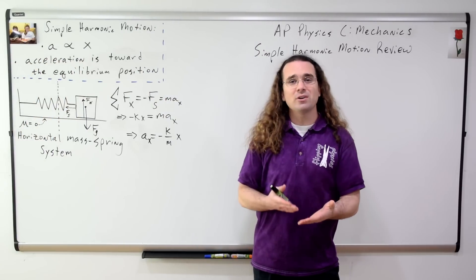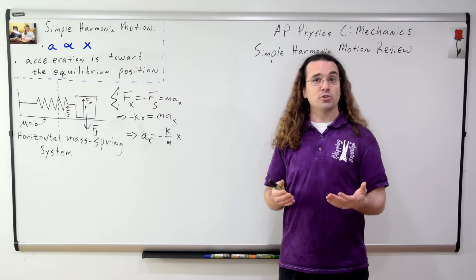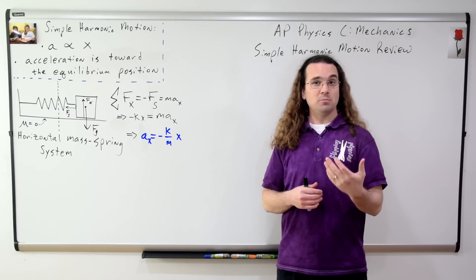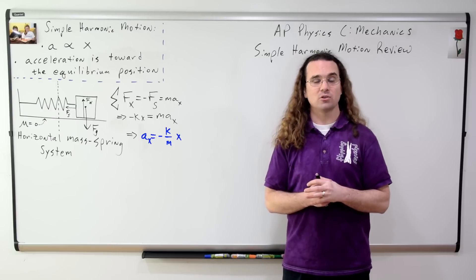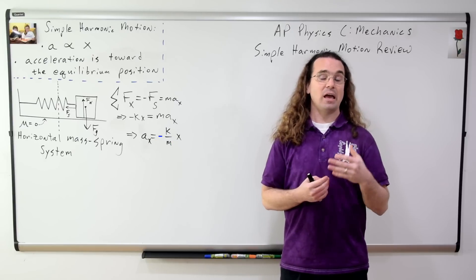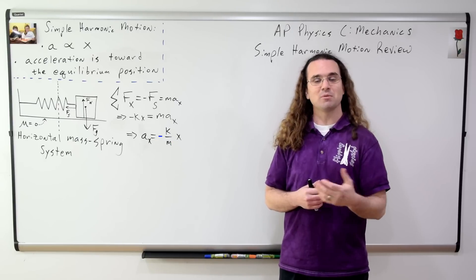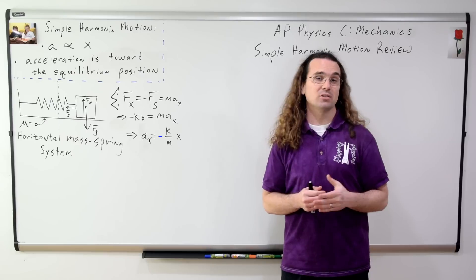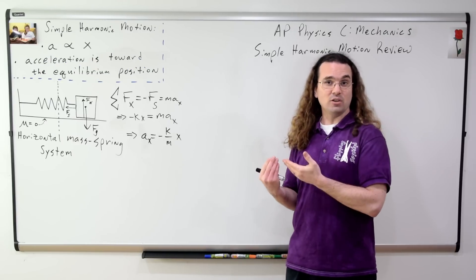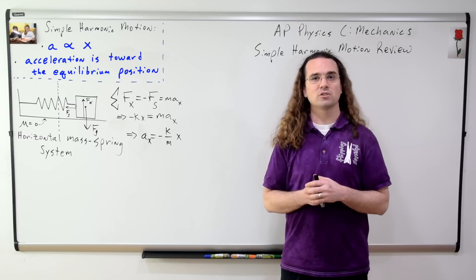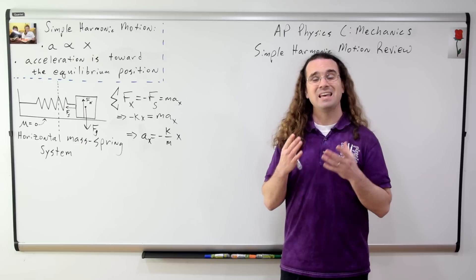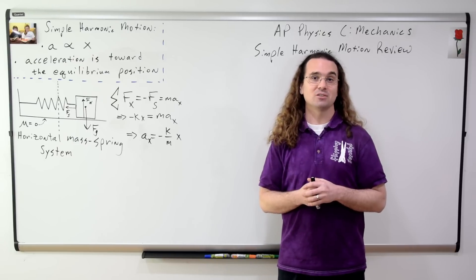Notice how the acceleration is proportional to the displacement from equilibrium position. In other words, as the displacement increases, the magnitude of the acceleration also increases. And because of this negative, the direction of the acceleration is opposite of the direction of the displacement from equilibrium position — in other words, the acceleration is directed toward the equilibrium position. Which means this equation fits the conditions for simple harmonic motion, which is why this block will continue to slide back and forth indefinitely in the absence of friction.